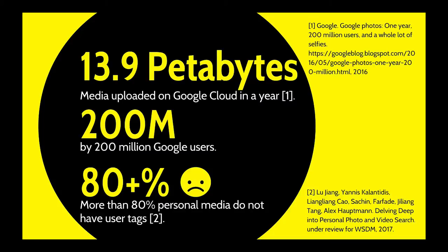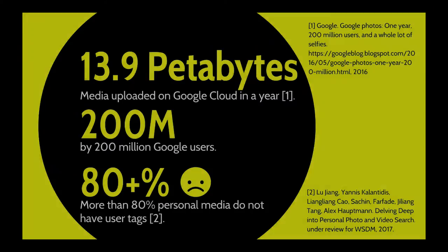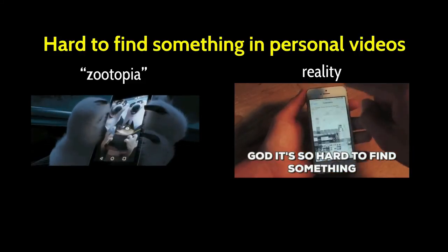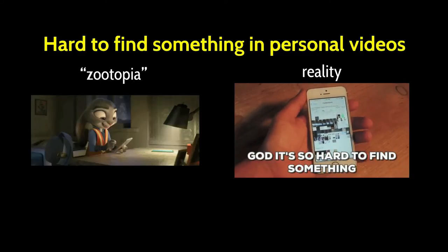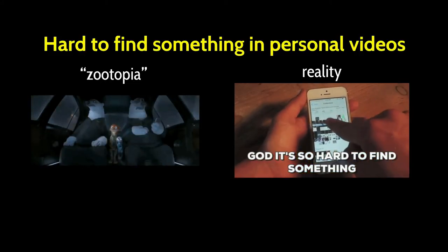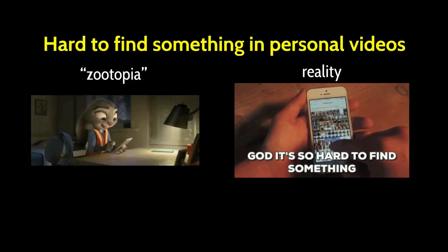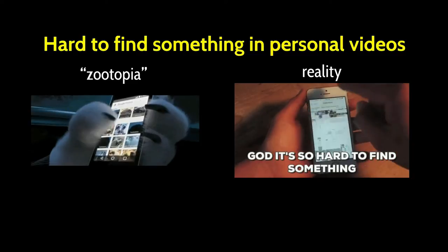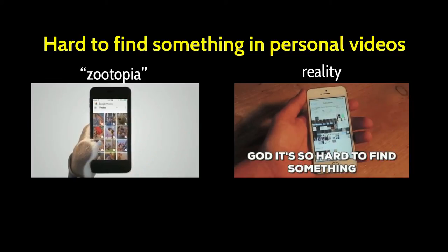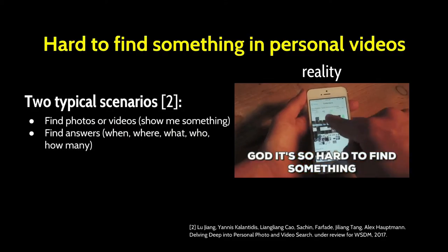Unfortunately, however, about 80% of personal photos and videos do not have any user tags, which means these videos and photos are just like a giant black box sitting in our cell phone. Therefore, unlike in a movie where we can always find what we want at our fingertips, in reality it takes a long time and lots of effort to find some photos on the cell phone. This is especially difficult for personal video with long playback time.